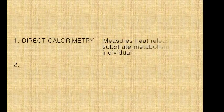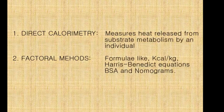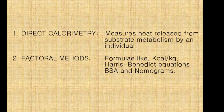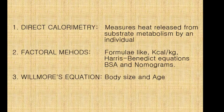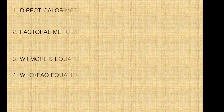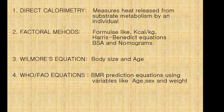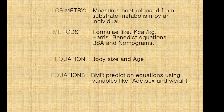For example, using direct calorimetry, which measures heat released by an individual through energy consumption; factorial methods, which include formulas such as use of kilocalories per kilogram of body weight; Harris-Benedict equations; body surface area; and use of the Nomogram equation, which uses body size and age variables. Finally, the World Health Organization and Food and Agriculture Organization of the United Nations BMR prediction equations.